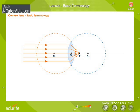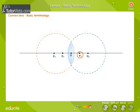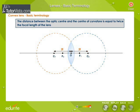Since the lens is transparent, light can pass through the lens in either direction. Thus, there will be two principal foci at equal distances from the optical centre of the lens, provided the medium on either side of the lens is the same. Thus, F1 and F2 are the foci of the given lens. The distance between the optic centre and the focus is the focal length of the lens. The distance between the optic centre and the centre of curvature is equal to twice the focal length of the lens.